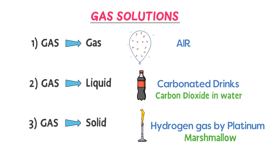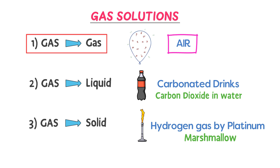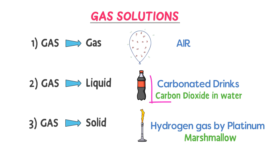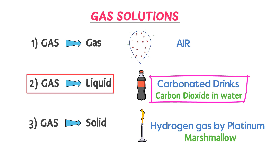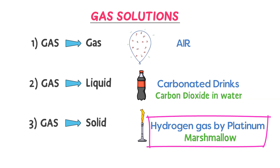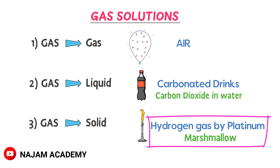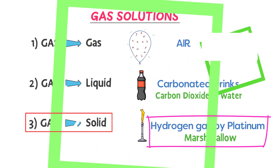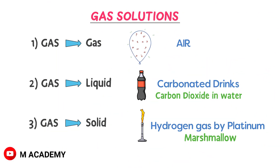So, air is the solution in which gas is dissolved in gas. Carbonated drinks are solutions in which gas is dissolved in liquid. Hydrogen gas absorbed by platinum or marshmallow is the solution in which gas is dissolved in solid. This was all about solutions and the nine different types of solutions.